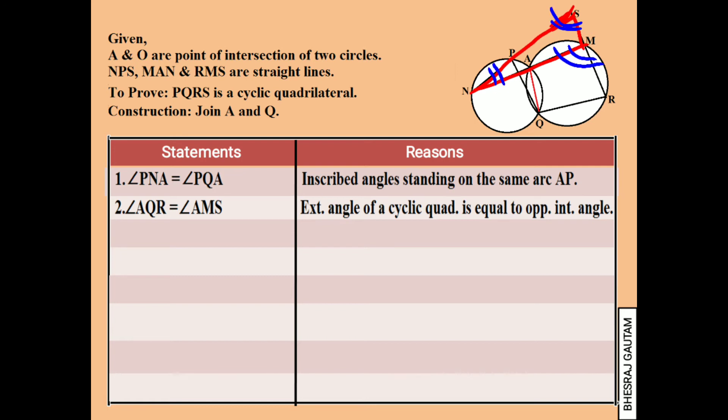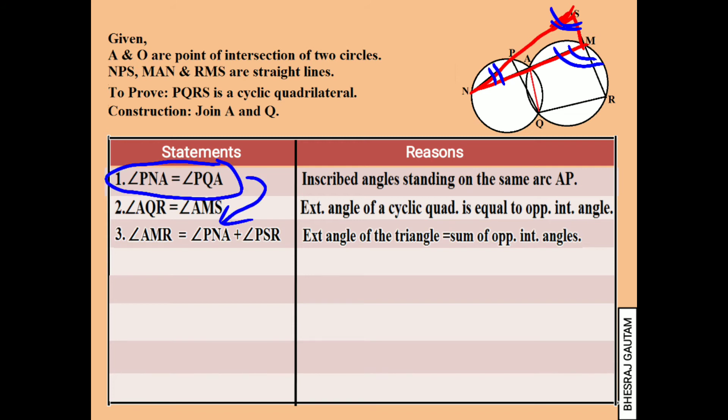As the next step, we read cyclic quadrilateral AQRM, and we can say that angle AQR plus angle AMR is equal to 180 degrees based on its property.